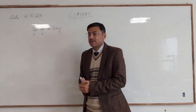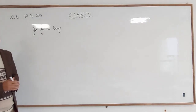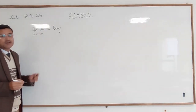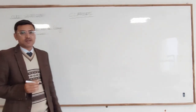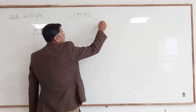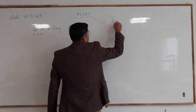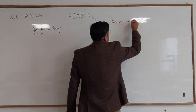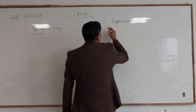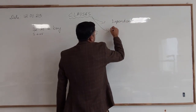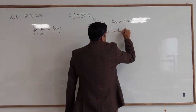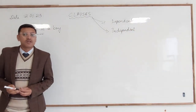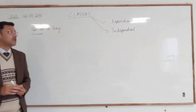For example, 'He is a boy' has a combination of a subject and a verb, so therefore this is known as a clause. Now, in clauses there are two types: number one, dependent, and the other one is independent.